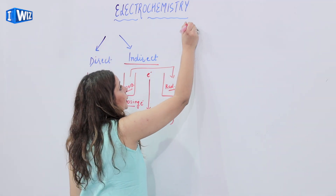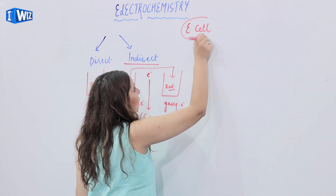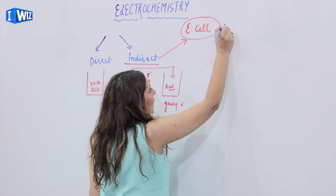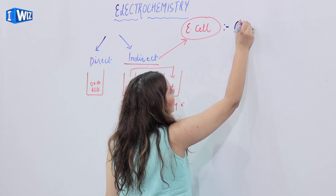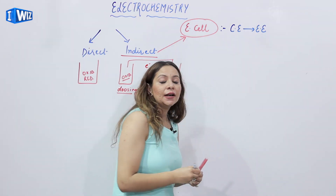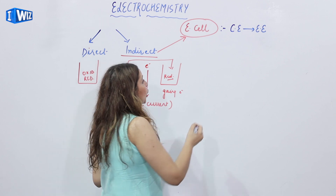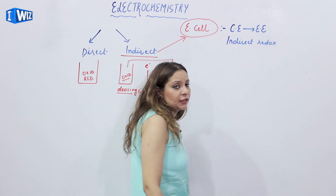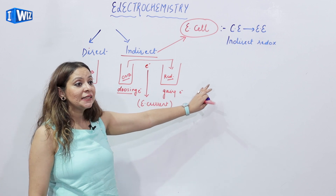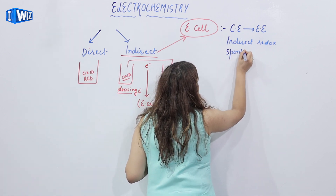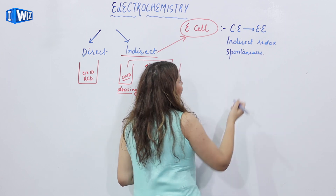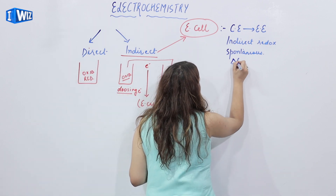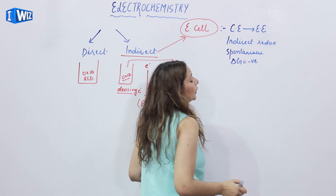If we talk about the electrochemical cell, in this cell an indirect redox reaction takes place. An electrochemical cell is a cell which converts chemical energy into electrical energy, because in it an indirect redox reaction occurs. The reactions occurring in the electrochemical cell are spontaneous — that means they occur on their own. We don't need to initiate them or supply any external source. So delta G for the reactions occurring in the electrochemical cell is negative.